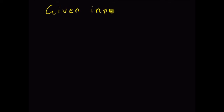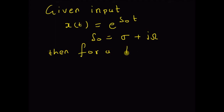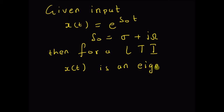Hello, welcome. In this short video, let us look at the theorem concerning eigen functions of a linear time-invariant system. Given input x(t) = e^(s₀t), where s₀ = σ + jω, then for a linear time-invariant system with impulse response h(t), the function x(t) is an eigen function...